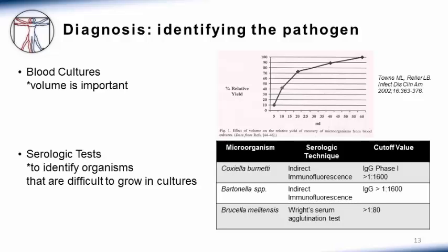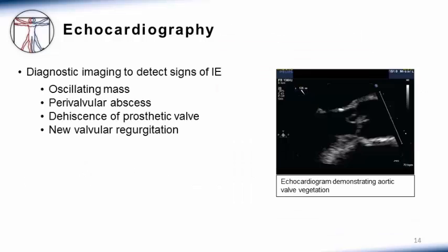Common serologic tests for infective endocarditis are shown in the table. Pathogens such as Coxiella, Bartonella, and Brucella are usually identified by serology. Imaging by use of echocardiography allows us to detect signs of infective endocarditis, such as vegetations seen as an oscillating mass, abscess, valve dehiscence, or new valvular regurgitation. Pictured here is an echocardiogram demonstrating an aortic valve vegetation.